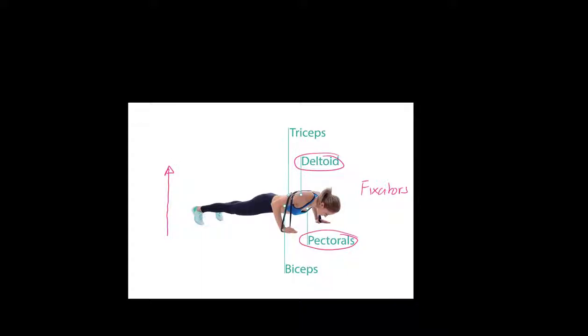What we would find here is that the tricep muscle is going to contract. It's going to contract and shorten. It's going to be the agonist. And that is going to create extension at the elbow and force this performer up. But that can only happen if this bicep, which is the antagonist, allows that to happen. So this bicep is going to relax and allow the upwards movement to occur.